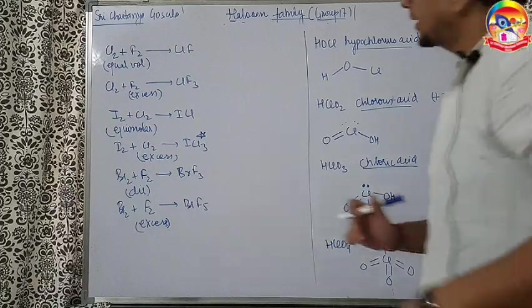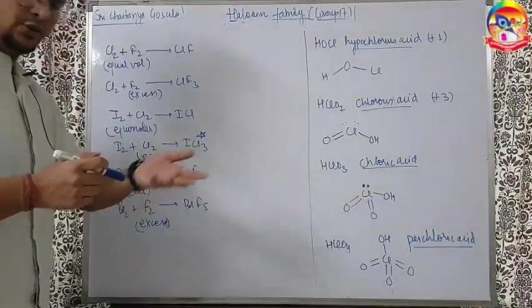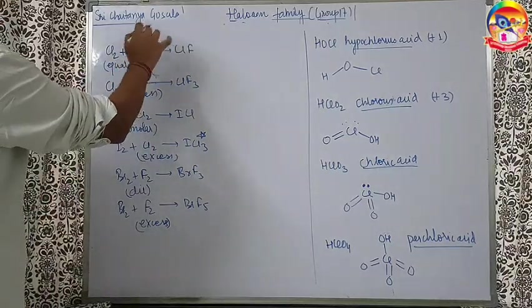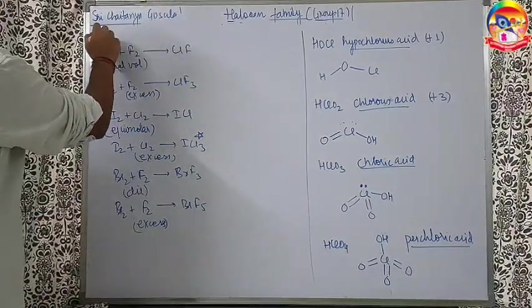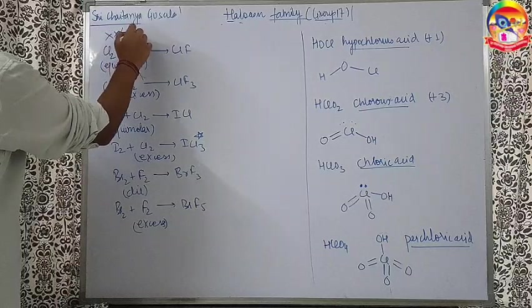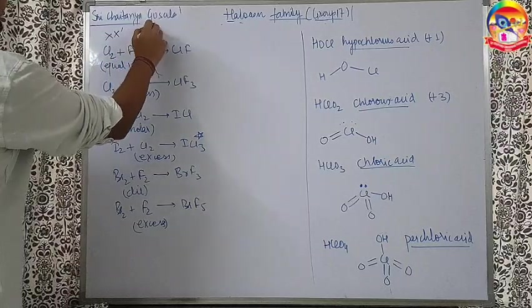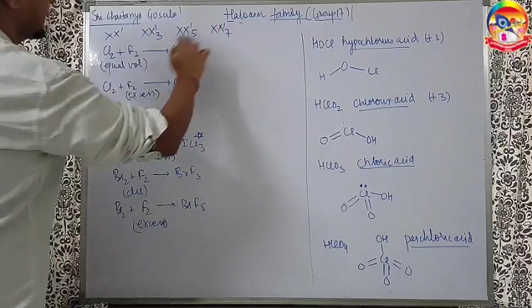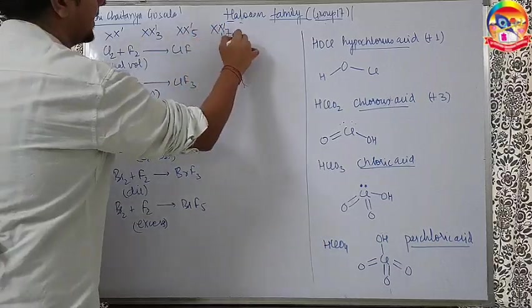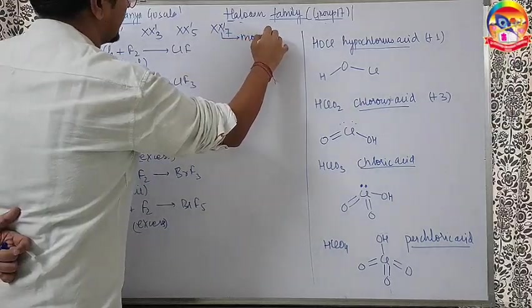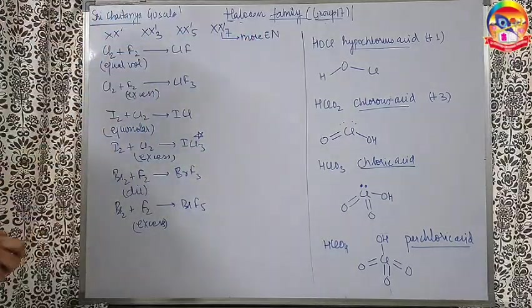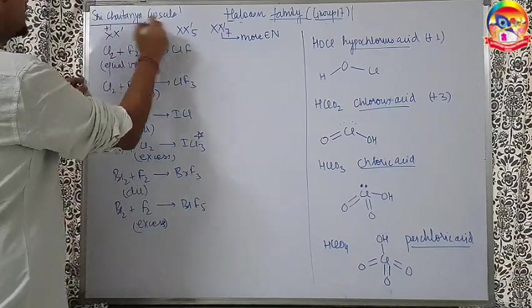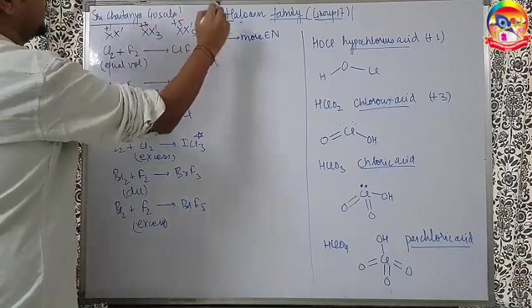Let us talk about the interhalogen compounds now. Interhalogen compounds, by name it is clear, are made by two halogens. Whenever the interhalogen compound is there, it is in the form of XX'1, XX'3, XX'5, XX'7, where the right side element has to be more electronegative. The X' here is more electronegative and the left side element has plus 1, plus 3, plus 5, plus 7 oxidation states.